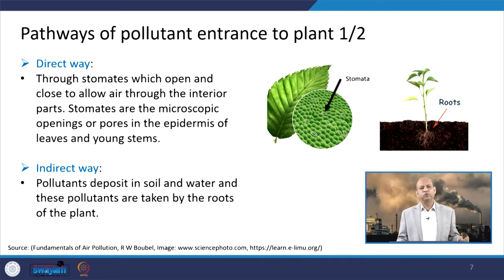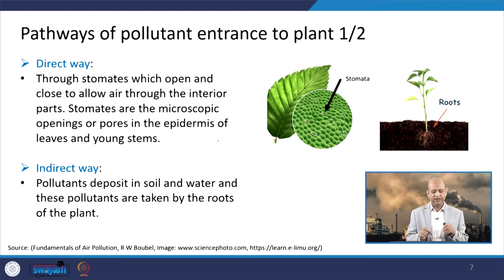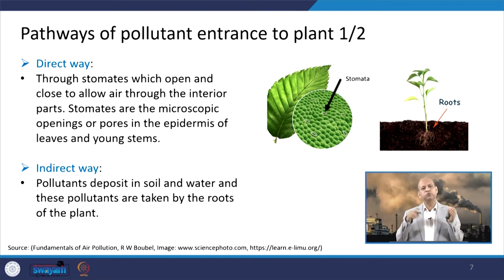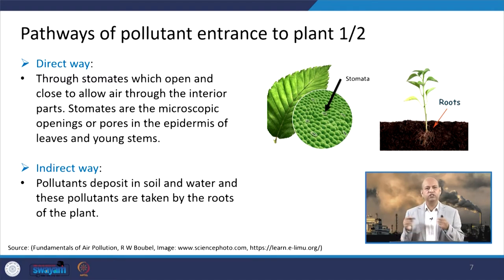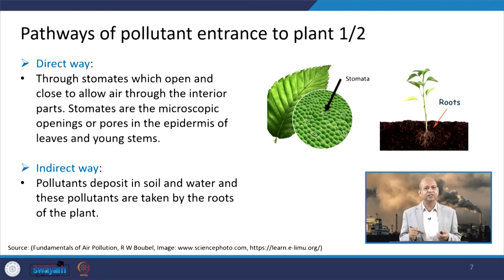When we talk about the pathways of pollutant entrance into plants, it can be direct or indirect. Direct means through stomata — very small pores, basically microscopic openings in the epidermis of leaves and young stems. Through that, a pollutant can enter the plant system. Indirect pathways exist because pollutants can be deposited onto soil or onto some water body from which the plant is watered. So it can come through soil or water, and can go through the roots as well — both direct and indirect.